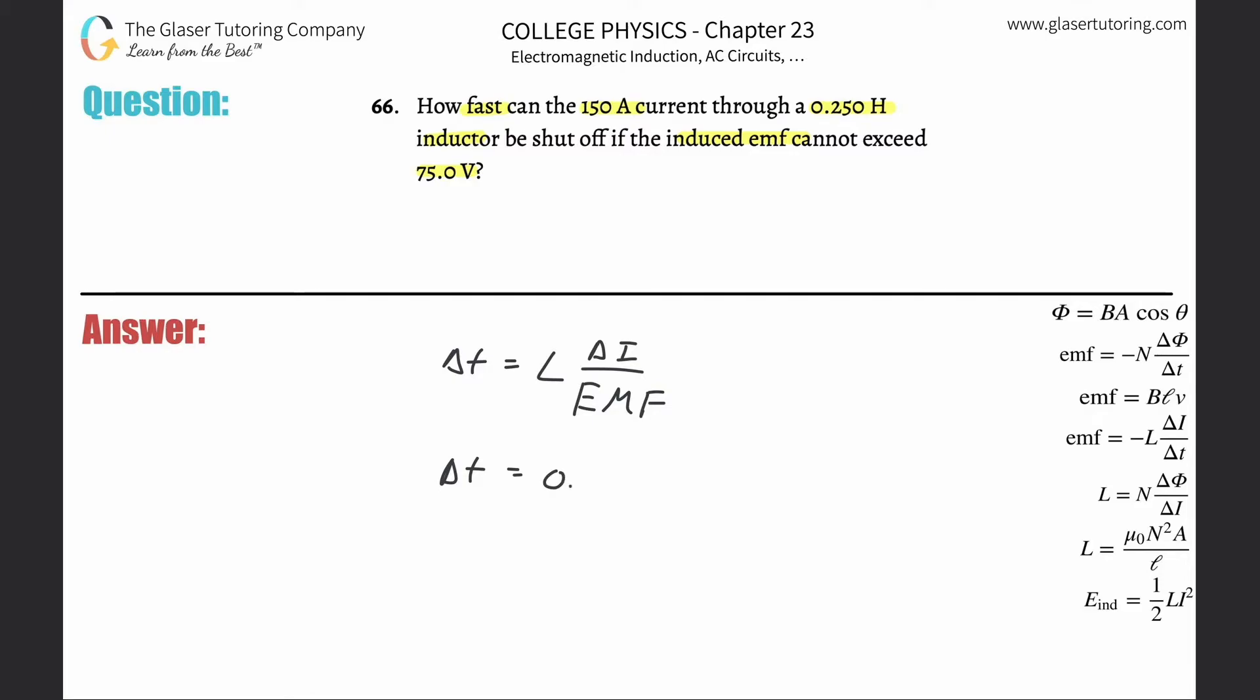So there's going to be 0.25. That's the self-inductance value, right? Henrys is the unit of inductance. Then multiplied now by the change in the current.